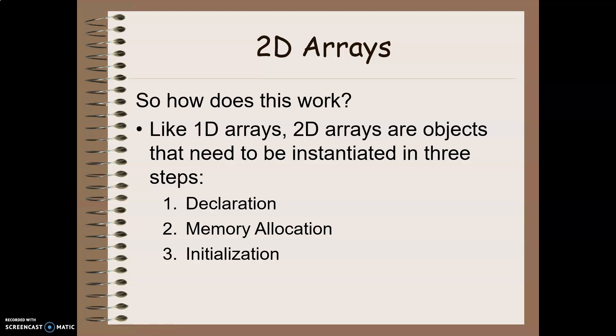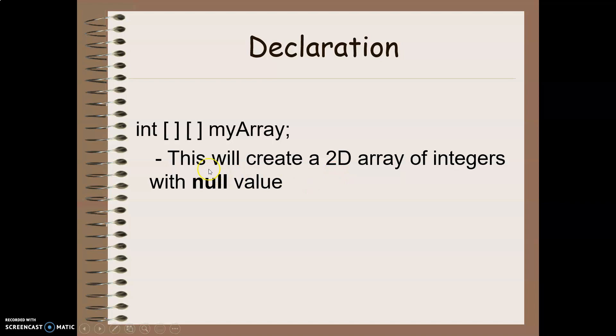So how do we actually go about creating this in code? Just like one-dimensional arrays, two-dimensional arrays are objects that need to be instantiated in three separate steps. First we have array declaration, then we have to allocate the memory that we're going to use for the data that we're going to store, and then we initialize the values. So let's look at declaration first. The pattern is the same as what we saw in one-dimensional arrays. We have the data type, followed by a symbol indicating we're working with an array, those empty square brackets. But now we're using a two-dimensional array, so we add a second set of square brackets. We, in theory, could keep doing this for three-dimensional and four-dimensional and so on by continuing to add on square brackets. And then the last thing here we have is our variable name. This code here is going to create a two-dimensional array of integers with a null value.